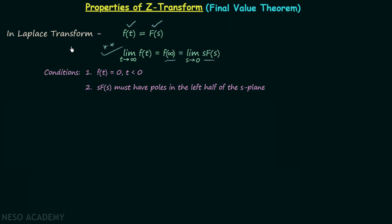There are two conditions which must be satisfied in order to use the final value theorem. Condition 1 says the final value theorem is only applicable when F(t) is equal to 0 for all values of t less than 0. Condition 2 says that the function S·F(S) must have all its poles in the left half of the S-plane. When no ROC is given along with the Laplace transform F(S), we assume condition 1 is satisfied. We have already solved many examples using this theorem.